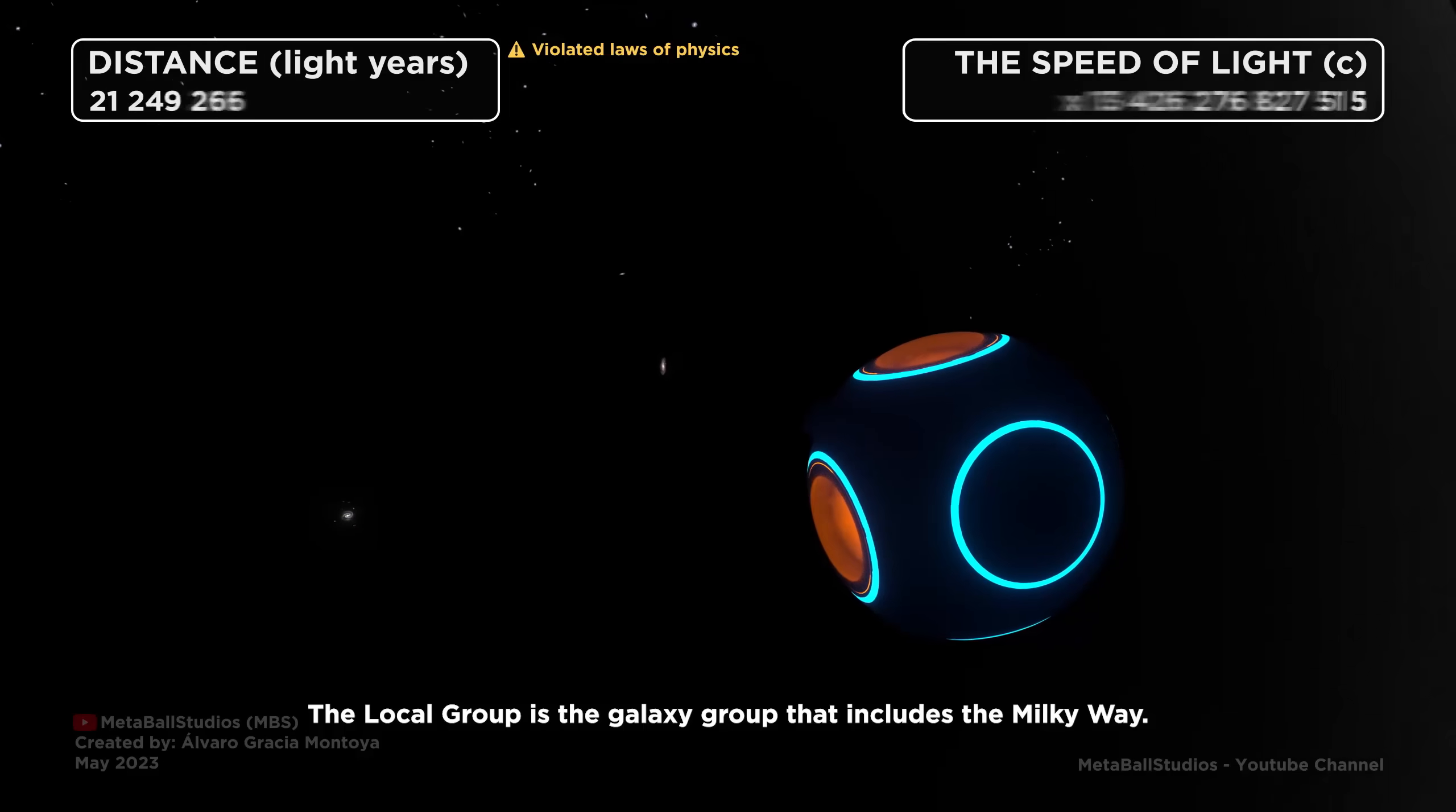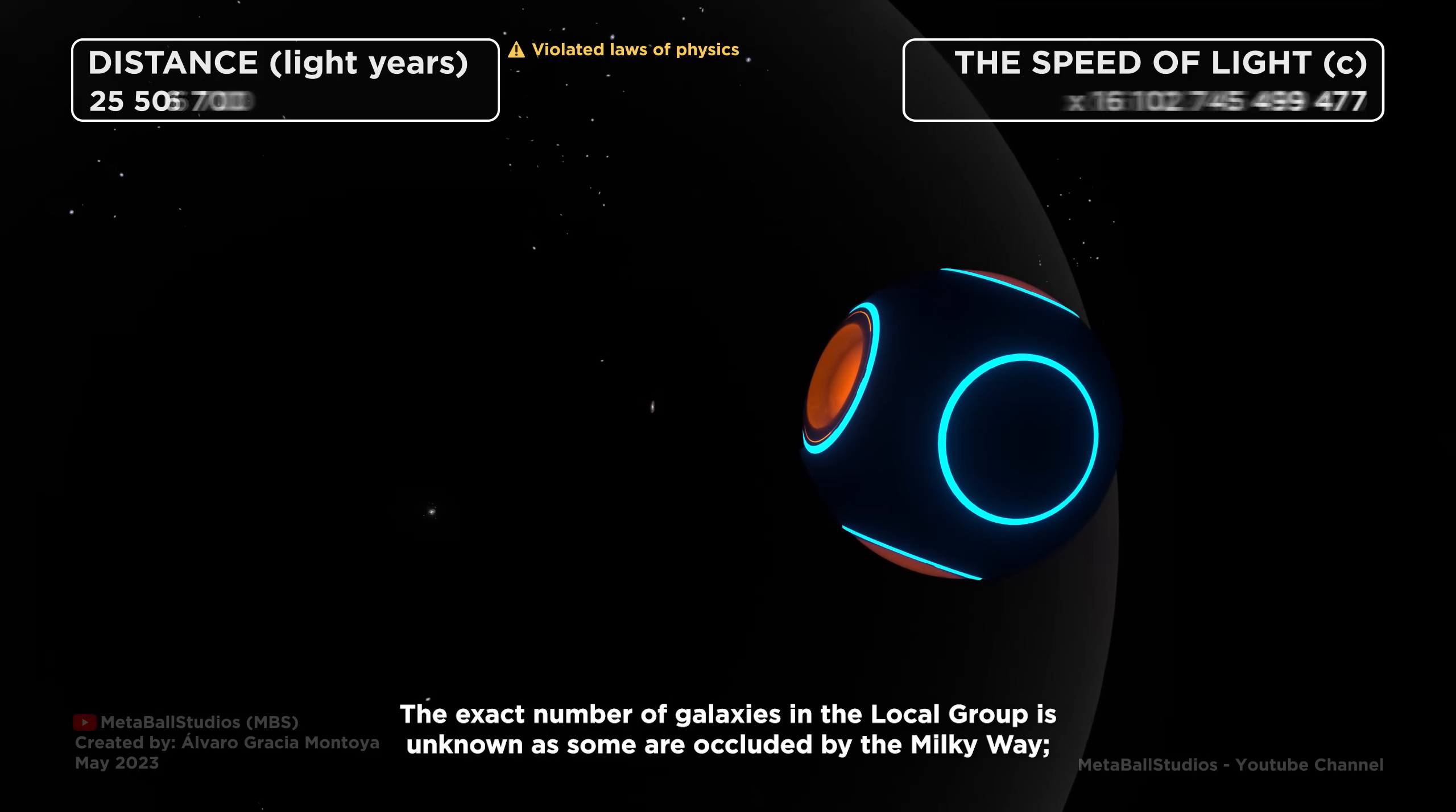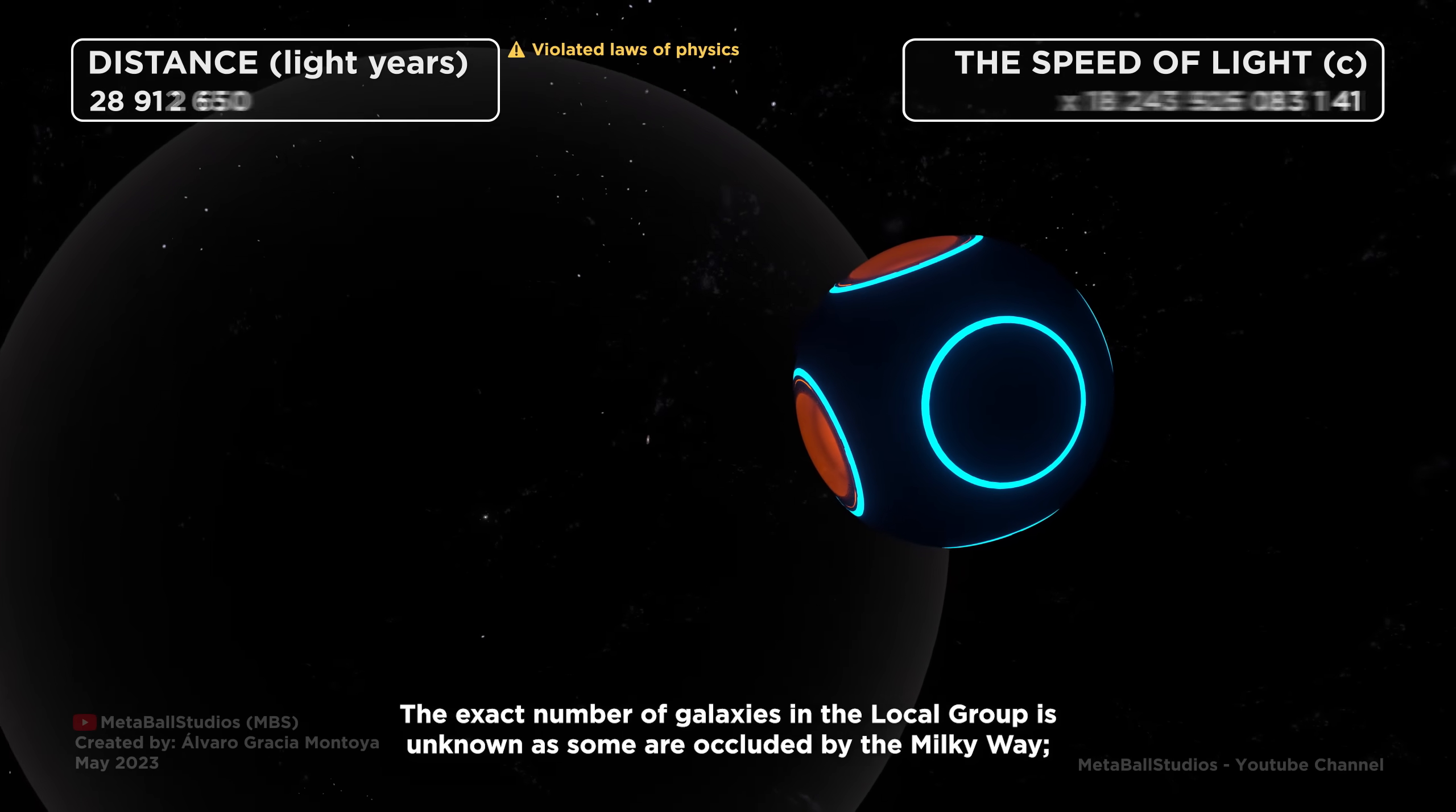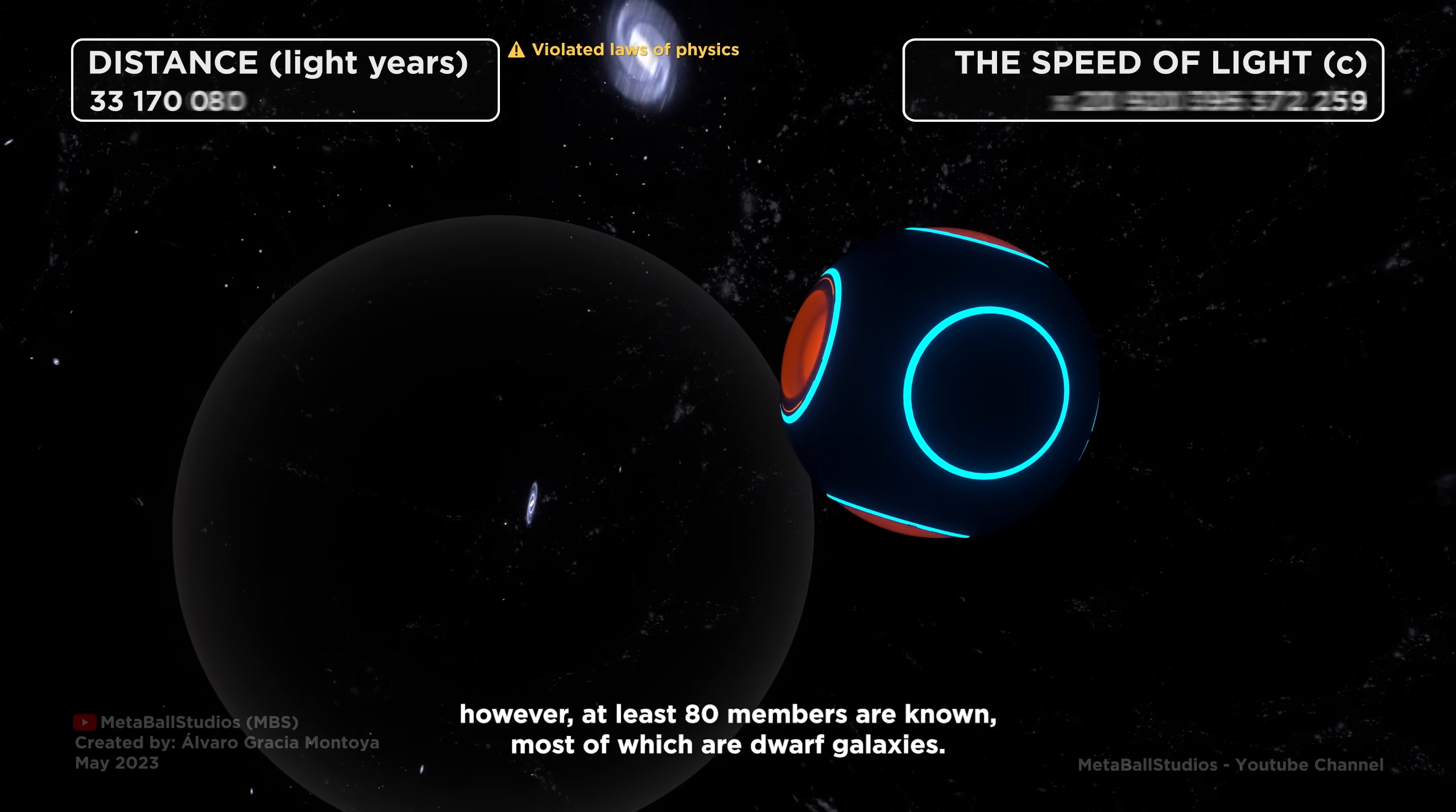The local group is the galaxy group that includes the Milky Way. The exact number of galaxies in the local group is unknown as some are occluded by the Milky Way, however, at least 80 members are known, most of which are dwarf galaxies.